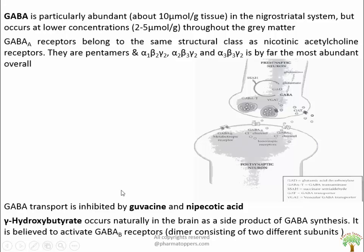The transport is inhibited by guvacine and nipecotinic acid. Gamma-hydroxybutyrate occurs naturally in the brain as a side product of GABA synthesis, and as a synthetic drug it was found to favor bodybuilders by evoking the release of growth hormone. It is known for its euphoric and disinhibitory effects, and is believed to activate GABA-B receptors through conversion into GABA. It is also found to bind at growth hormone binding receptor sites.